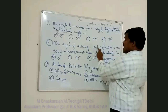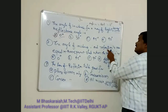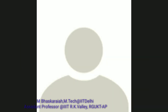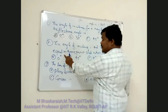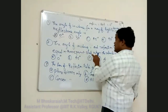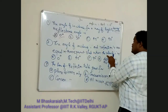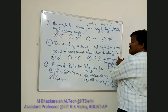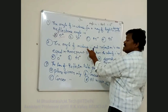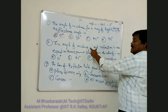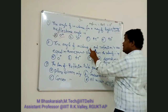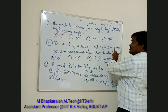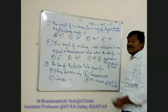The angle of incidence i and the angle of reflection are actually equal. In a transparent slab, when the value of the angle of incidence i and the angle of refraction are equal to...